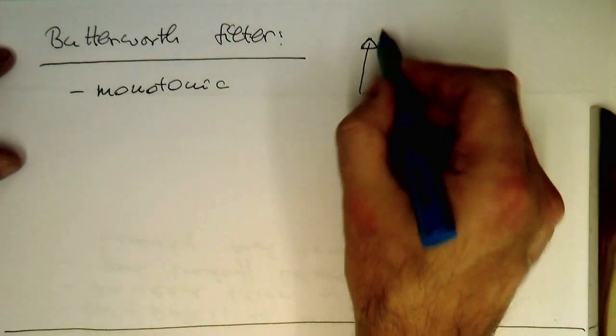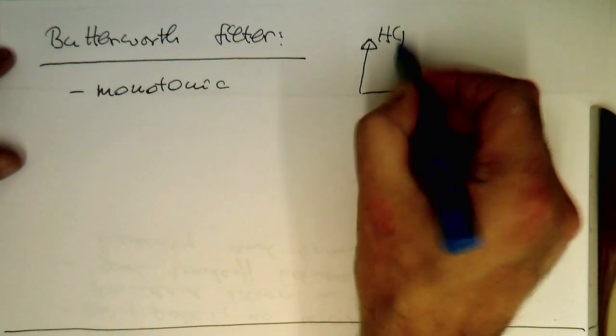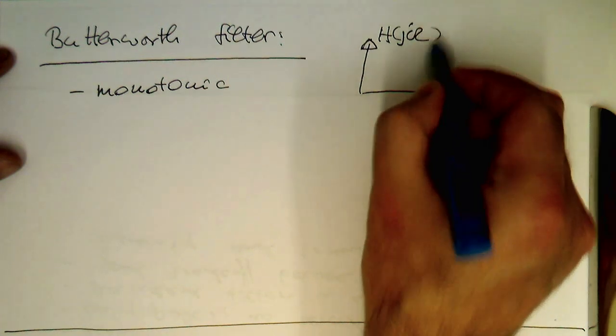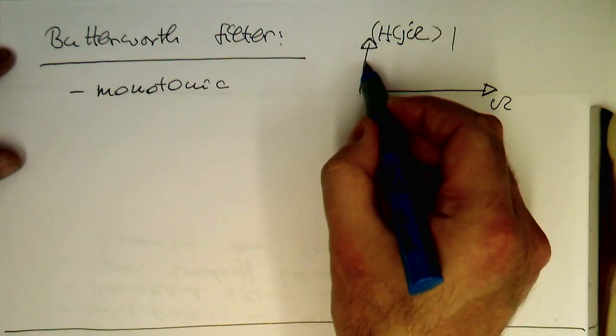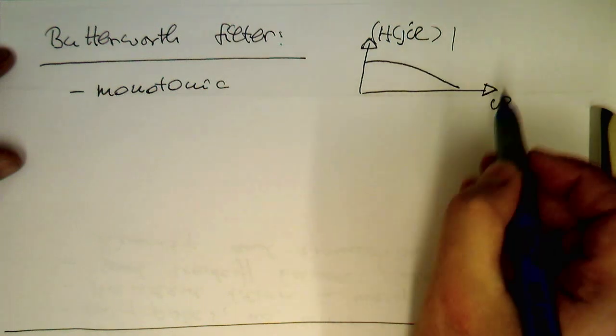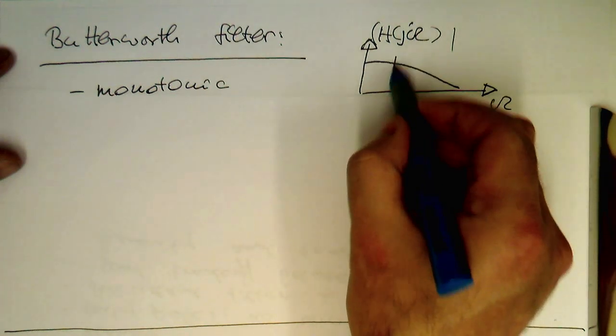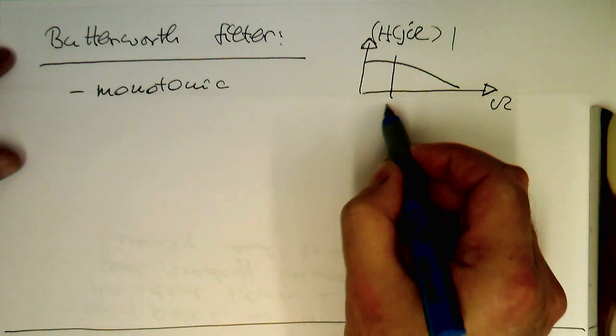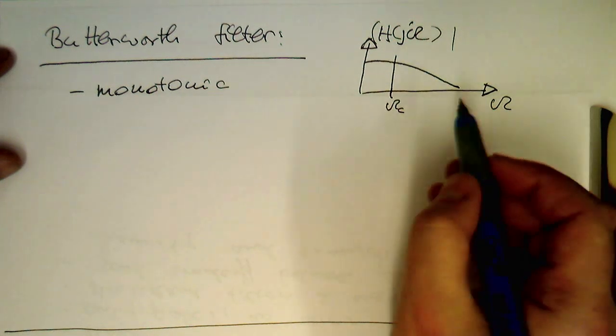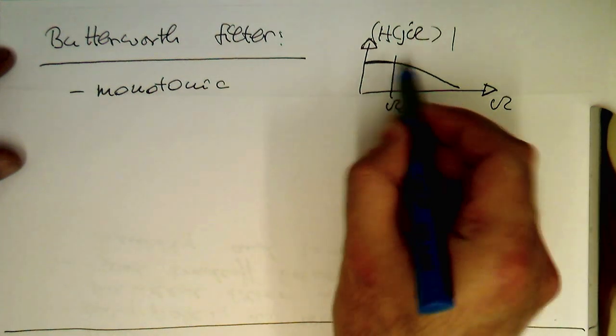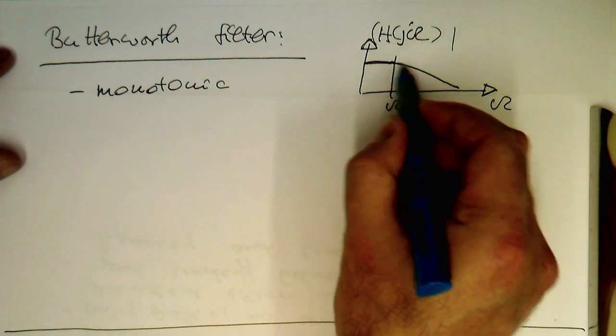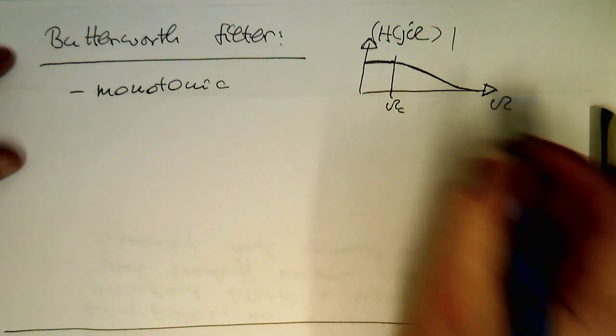So if this is here H, then the filter essentially just goes like this. So we have somewhere our ωc here, and before that it's reasonably flat, and then it has a monotonic transition here.